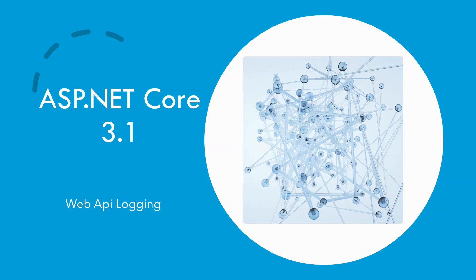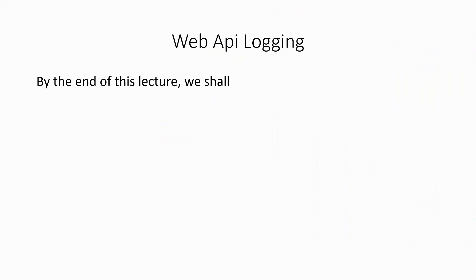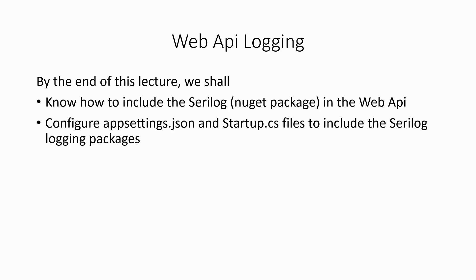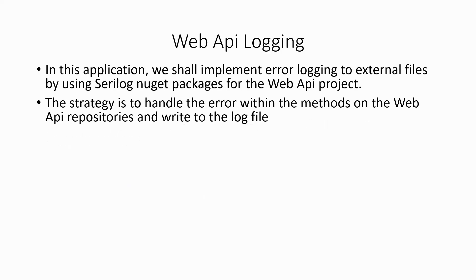Let's switch over to web API logging. In this case, I will restrict it to logging of errors or exceptions. By the end of this lecture, we shall know how to include SeriLog. I will be including a few packages from the third-party NuGet package SeriLog in the web API and configure the app settings.json and startup.cs startup class to include the SeriLog logging packages. In this application, we shall implement error logging to external files by using SeriLog NuGet packages for the web API project.